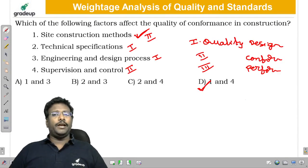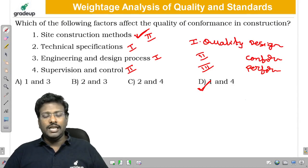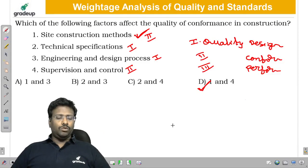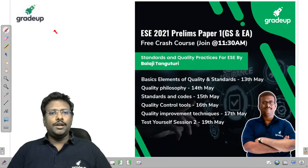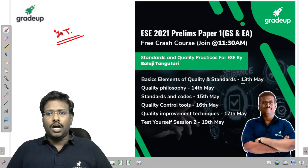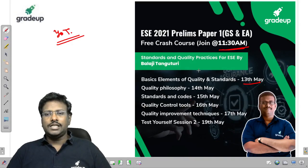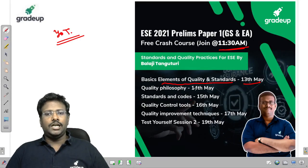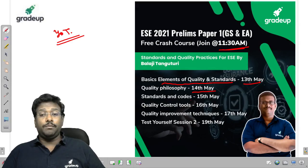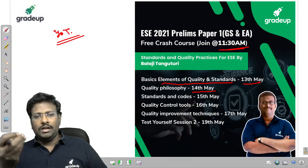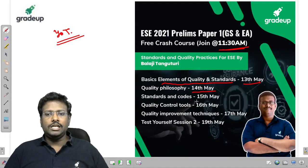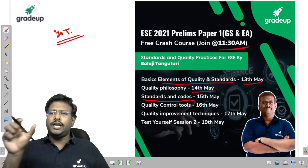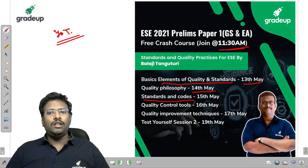These two questions are from GATE ESC 2020. Similar types can be expected in the future. In order to cover this type of questions, I am coming in front of you on YouTube from the 13th onwards at 11:30 AM. On 13th, I will discuss the basic elements of quality and standards. On 14th, quality philosophies. On 15th, quality standards and codes, including ISO 9000 and 9001 series. On 16th, control charts — attribute and variable control charts, histograms, and scatter diagrams.